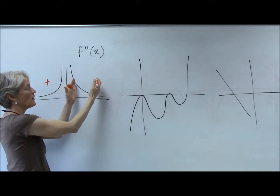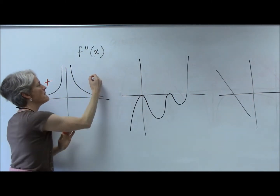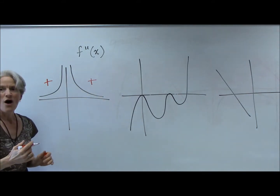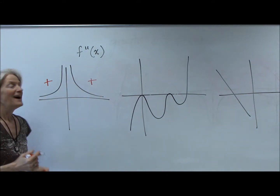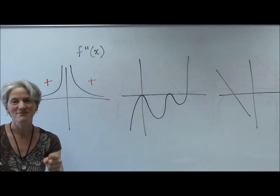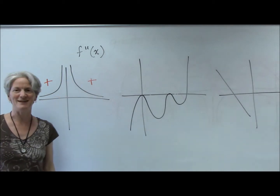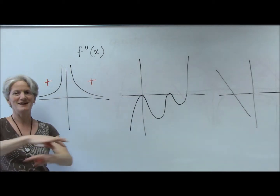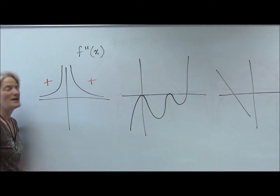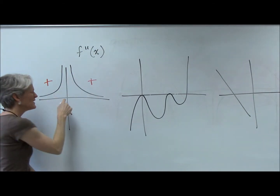How about over here — positive zone or negative zone? Positive. Wait a minute, but isn't that going downhill? Don't look at the slope — that would give me the third derivative. We're not talking about the third derivative. Just look at: am I above the x-axis or below the x-axis?